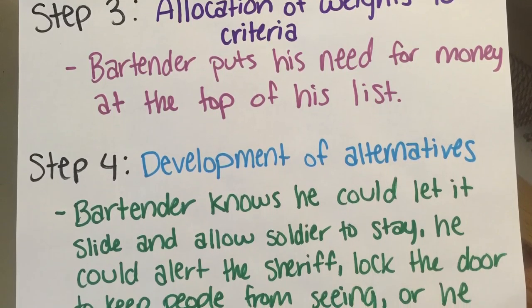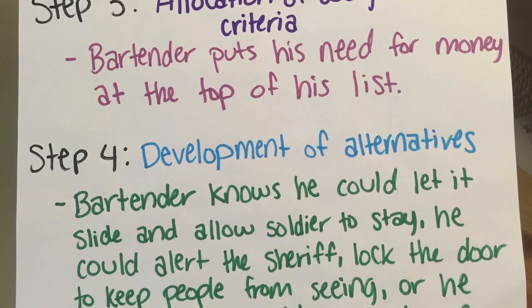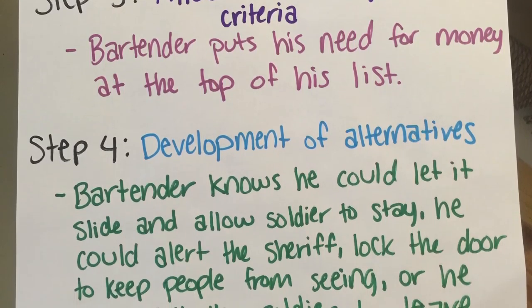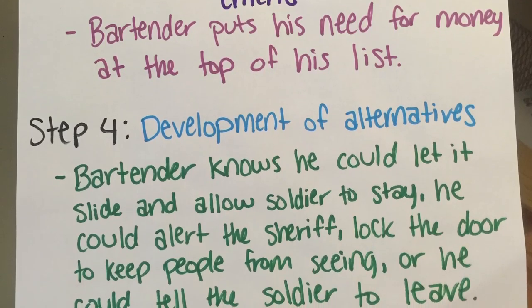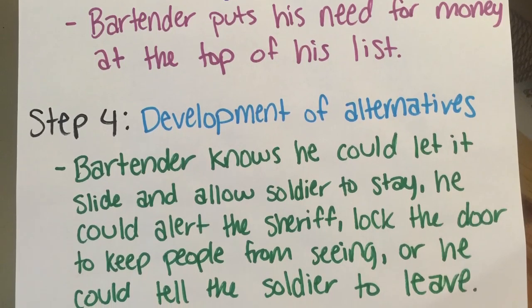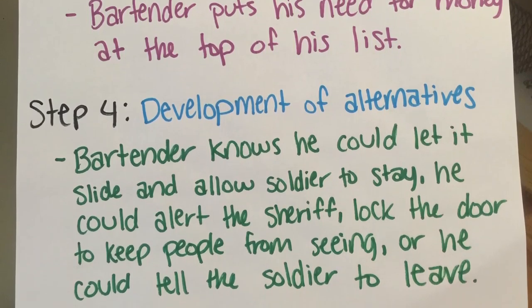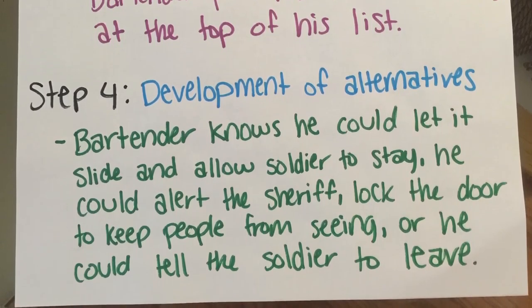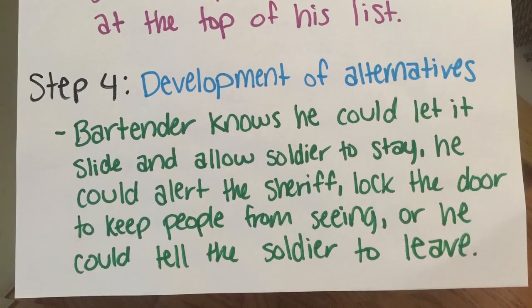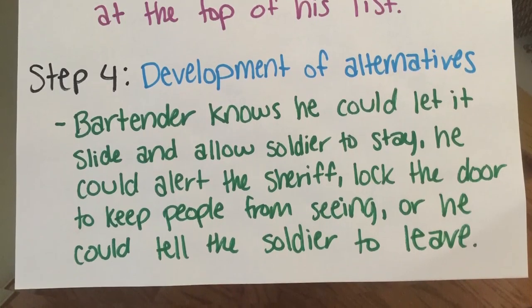Step 4: Development of alternatives. The bartender knows he could let it slide and allow the soldier to stay, he could alert the sheriff, lock the door to keep people from seeing, or he could tell the soldier to leave.